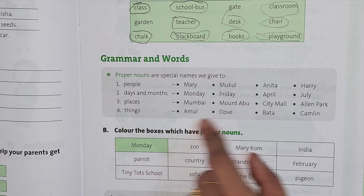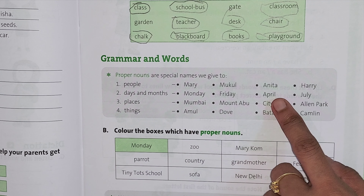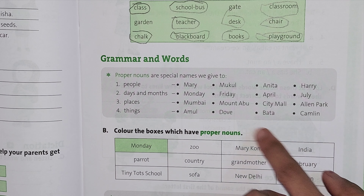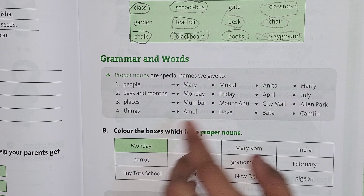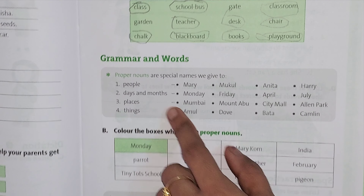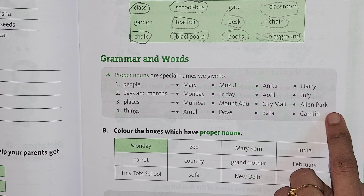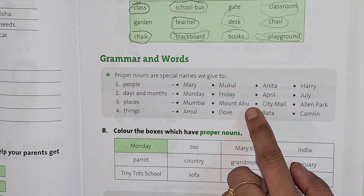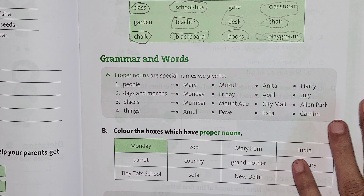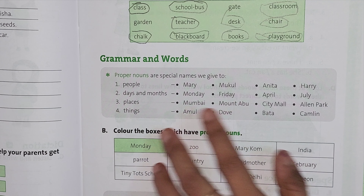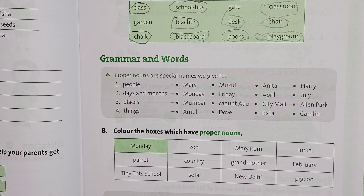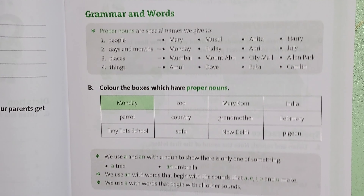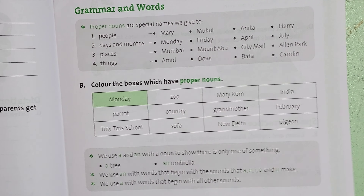Days and months are also proper nouns: Monday, Friday, April, June, July - all these are proper nouns. Places also come under proper nouns: Mumbai, Mount Abu - all these particular specific things come under proper nouns.